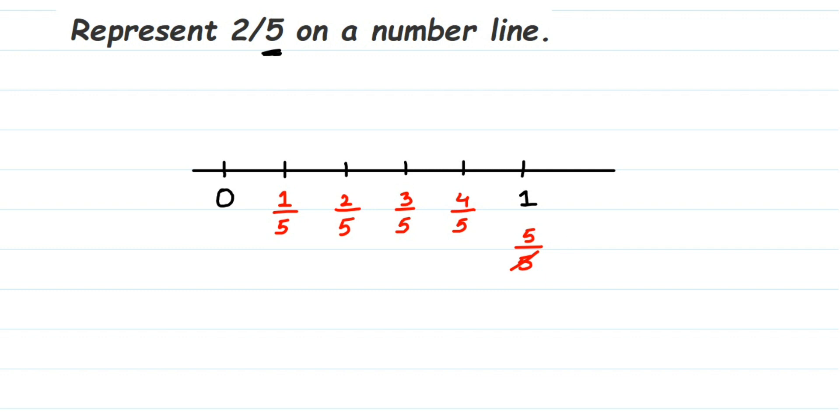Now we have to represent 2 by 5, so 2 by 5 is here on the number line. That's it, it's very simple. Check if the given number is proper or improper. If it is proper, locate the denominator, so that many equal parts you have to do.